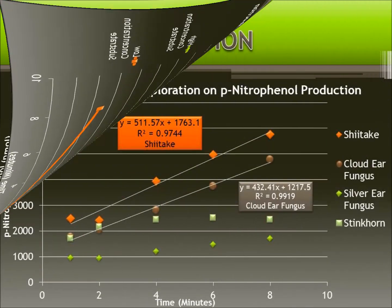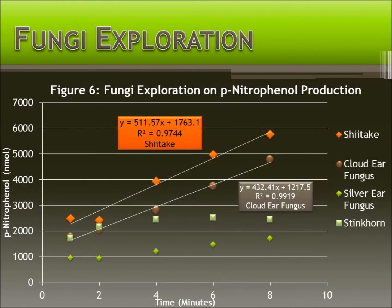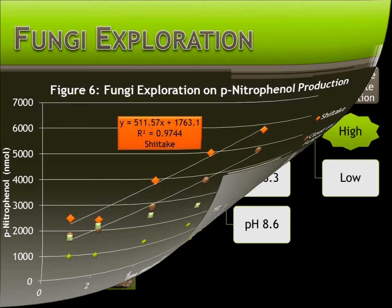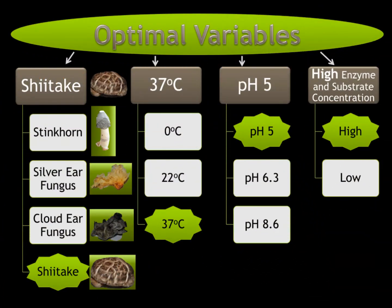Among the four fungi tested, the shiitake mushroom produced the most p-nitrophenol. In conclusion, a high temperature, a 5.0 pH, high enzyme and substrate concentration, and the shiitake mushroom produce p-nitrophenol most efficiently.